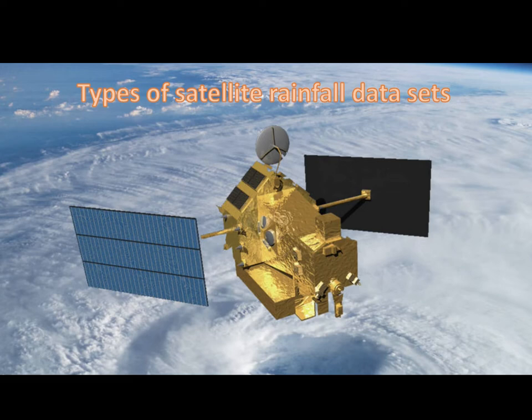Hello everyone, welcome back to the channel. In the previous videos we have seen how we can develop a rainfall-runoff model using artificial neural networks, where we used rainfall data from rain gauges to develop a good model. However, rainfall data from rain gauges is not available all the time and in all locations, so we need another data source which we can reliably use for developing a model or understanding the rainfall pattern in an area.